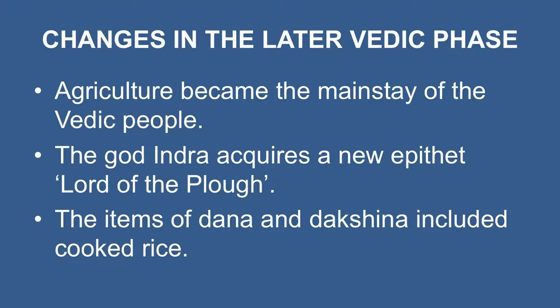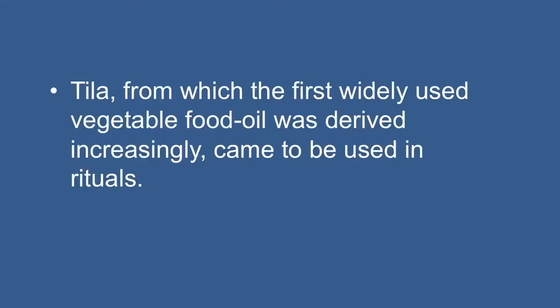During the later Vedic phase, agriculture became the main stay of the Vedic people. Many rituals were introduced to initiate the process of agriculture, and texts speak of ploughing with six and eight oxen. The buffalo had been domesticated for agricultural purposes, and was extremely useful in ploughing swampy land. The god Indra acquires a new epithet, 'Lord of the Plough.' The number and varieties of plant food increased. Apart from barley, people now cultivated wheat, rice, pulses, lentils, millet, sugarcane, etc. Agriculture produce began to be offered in rituals, and Tila, from which the first widely used vegetable food oil was derived, increasingly came to be used in rituals.